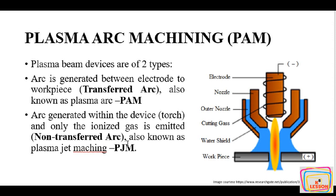In the transferred arc, the arc is generated between the electrode and the workpiece, and this is also called plasma arc machining. In the non-transferred arc, the arc is generated between the device torch and the ionized gas is emitted; this process is called plasma jet machining. As you can see in the image, there is an electrode in the nozzle, water is supplied to cool down the nozzle and provide shielding, and gas is supplied within the gap.